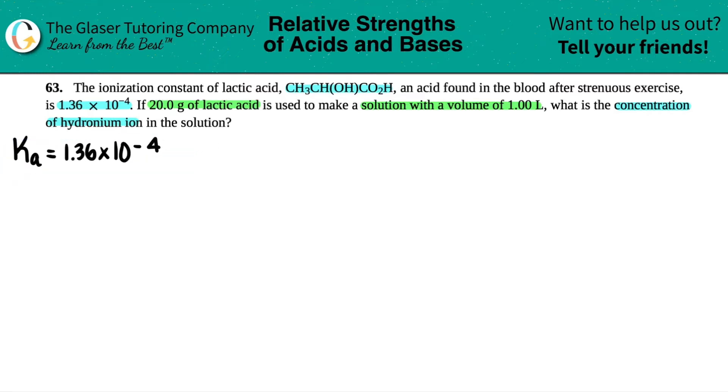So as soon as we see that we're using a Ka value, chances are we need to make a balanced equation. So let's go for it. The compound that we're talking about is lactic acid, which is CH3CHOHCO2H. Now, what acids do in solution is that they donate their hydrogen ion. And the hydrogen is going to be the one that is the most acidic that's bound to the most electronegative element.